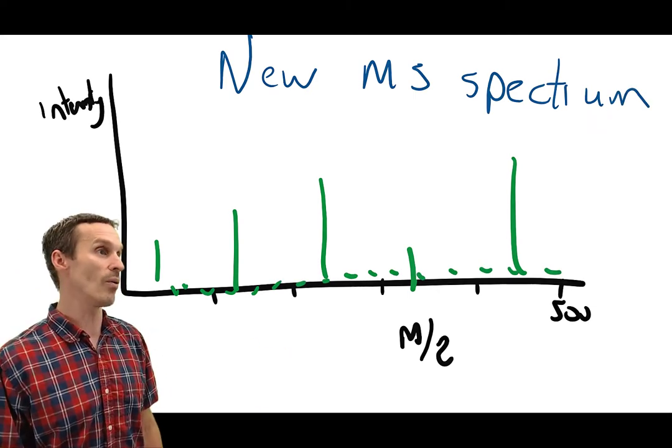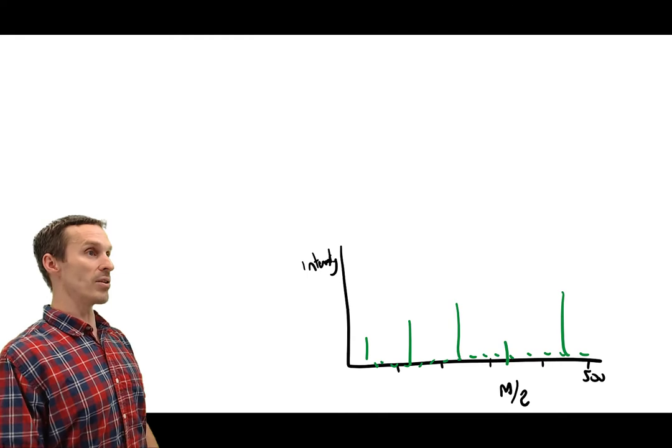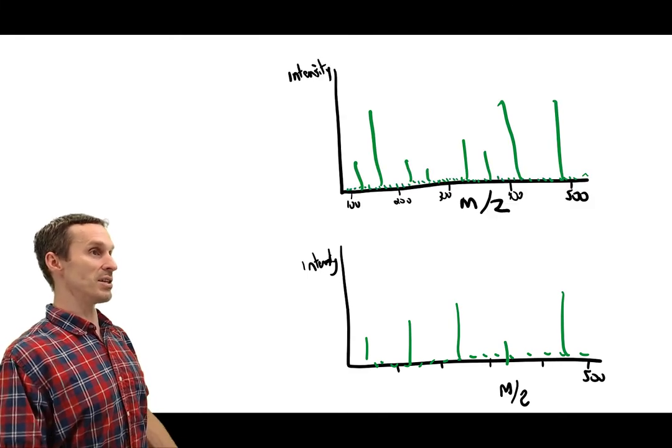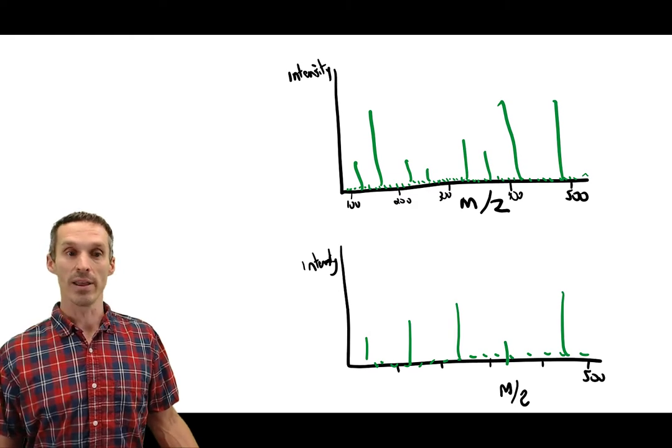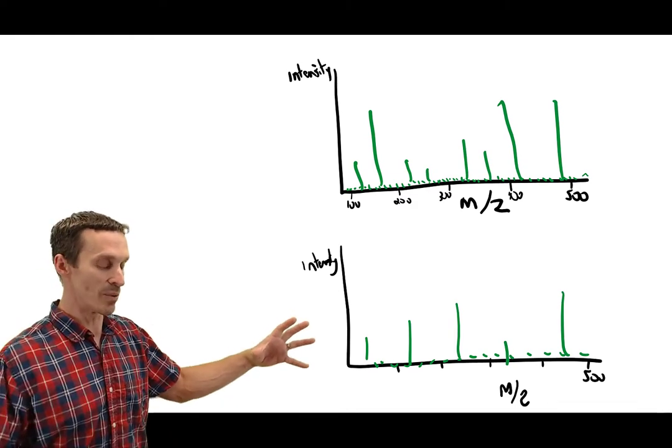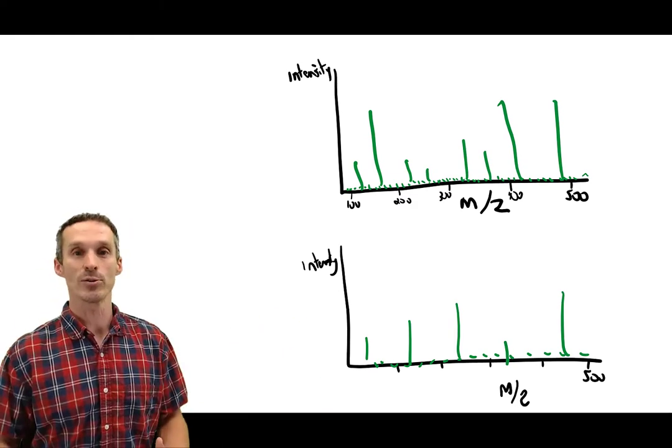Anyways, a new mass spectrum would show up at a new time, and more than likely it would be different than the one that we saw before it. If you compare the two, then yeah, you'll see a difference between them. That's what our total ion chromatogram gives us. It's one picture, but really in the computer all the mass spectra are stored.